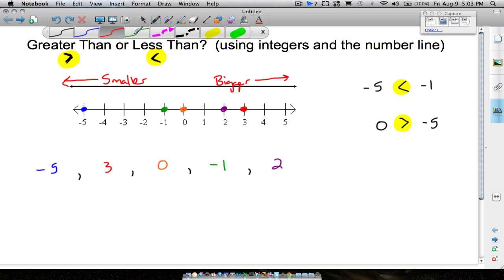So two more quick examples. Two and three, you probably wouldn't have to look at a number line because three is bigger than two, or we can read this as two is less than three.